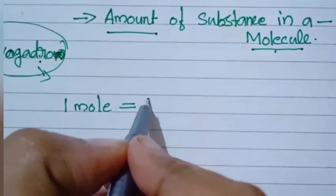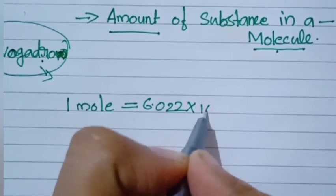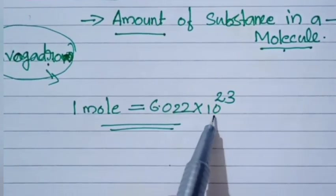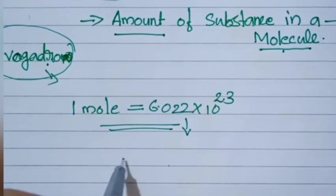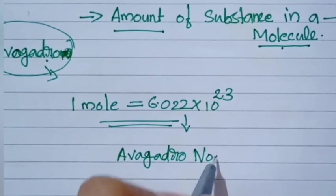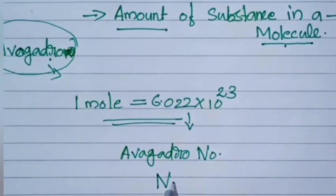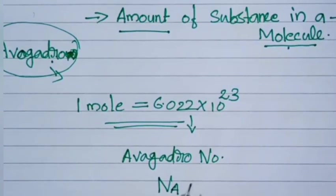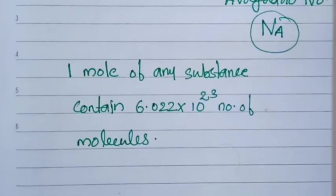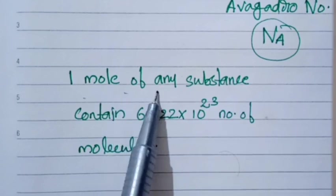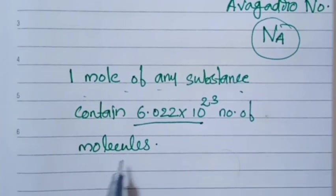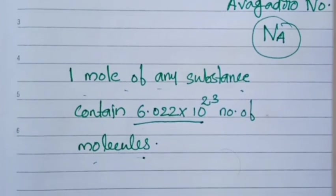According to Avogadro, one mole is equal to 6.022 × 10²³. This value is called the Avogadro number, denoted as Nₐ. One mole of any substance — whether it is an atom, molecule, or ion — contains 6.022 × 10²³ number of particles.